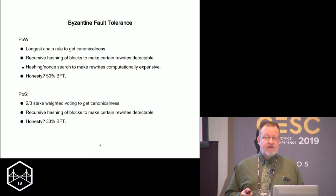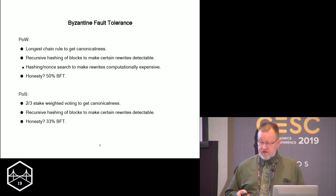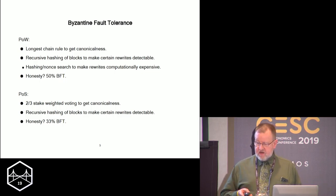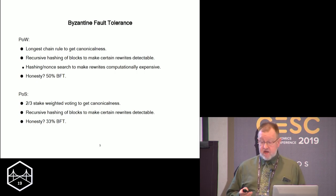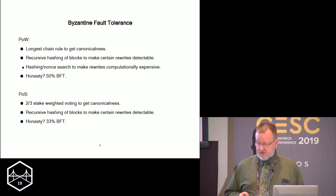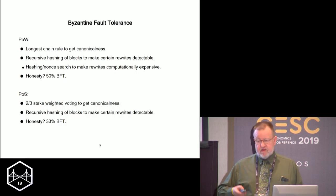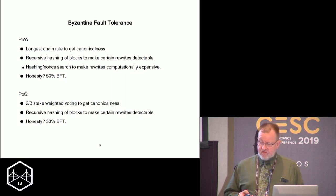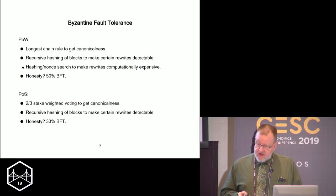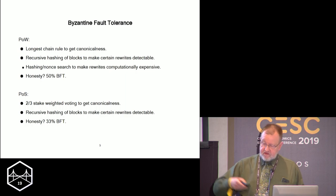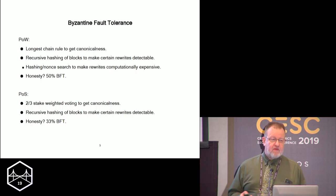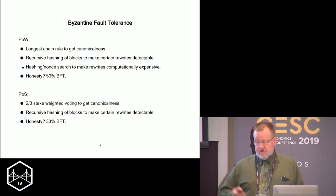Byzantine fault tolerance talks about how much of the system has to be honest and function correctly to achieve desired outcomes. With proof of work, you determine what's canonical by looking for the longest chain — the longest chain has authority in the system. You get immutability, or at least practical immutability, through recursive hashing of the blocks, which makes rewrites detectable and very expensive. Honesty is decided by the longest chain, meaning at least 50% of the hashing power has to behave according to protocol.